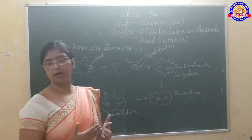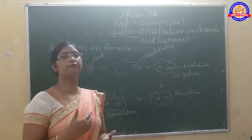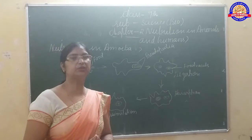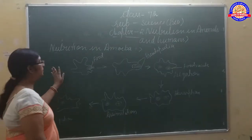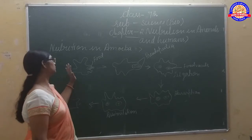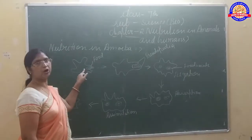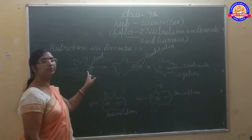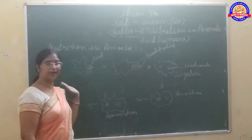Amoeba captures tiny particles of food with the help of false feet, which are called pseudopodia. The food particles come into contact with its body through these false feet.